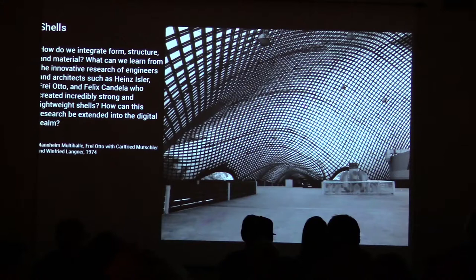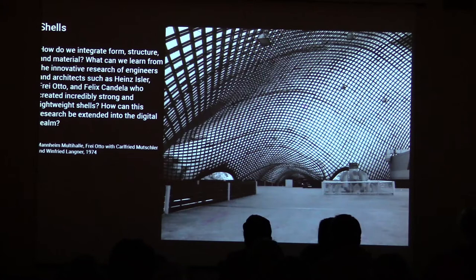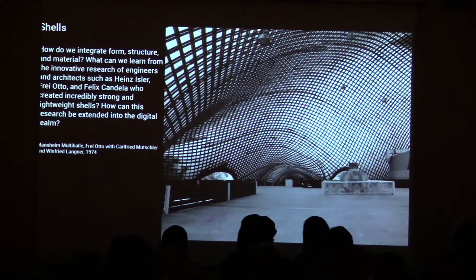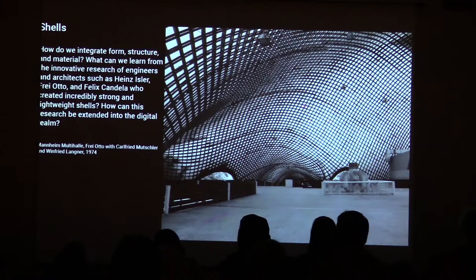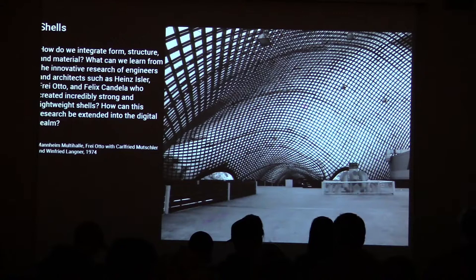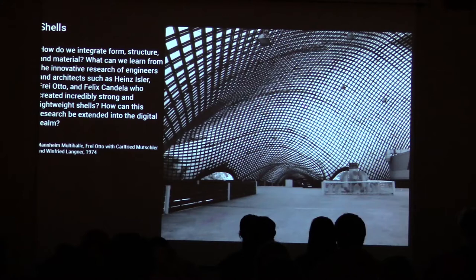For shells, what I've been very interested in with a number of projects is how do we integrate form, structure, and material, and what can we learn from this whole generation of really diverse engineers and architects and designers who were working from 1900 roughly to the 1970s — like Heinz Eisler, Freado, Candela, Gaudi, and many others — who had basically focused on a material practice of architecture, primarily focusing on one particular material like wood, concrete, or brick, and pushing that material to the limit to integrate it with a certain performance, with the resulting form coming out of that.